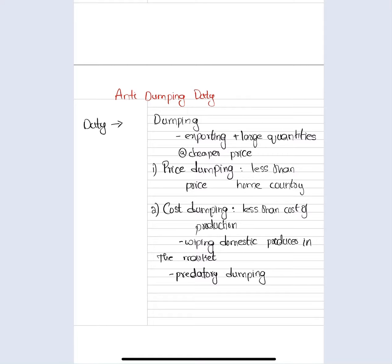India has imposed anti-dumping duty on five Chinese products for five years because these products are being sold in India at a price less than the normal price in Indian markets. For example, if China is exporting toys and the same toy manufactured and sold in India is priced at 10 rupees, but China is exporting to India at four or five rupees, people will definitely buy the Chinese products. In this way, China is planning to wipe out domestic producers in India and capture the Indian markets.